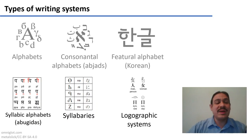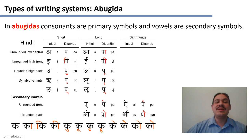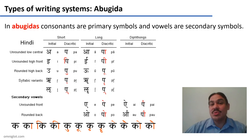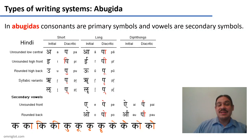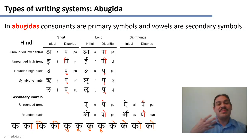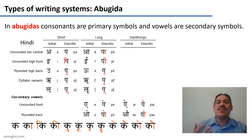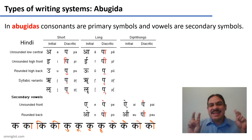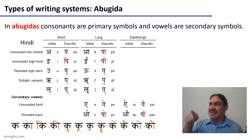Syllabic alphabets, or abugidas, are the type of writing used in most languages of India. In these languages the consonants are the main, primary symbols, and vowels are secondary symbols, similar to the diacritics in the Roman alphabet.